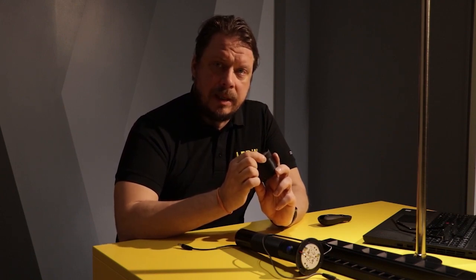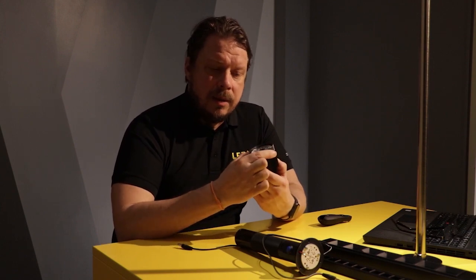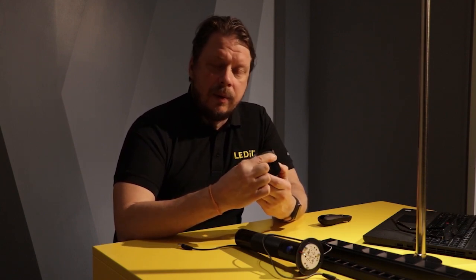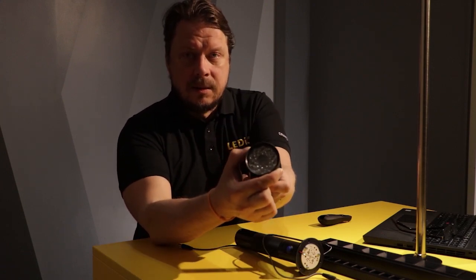For example, you can have your existing spotlight design that you designed with our standard fixed beam Ilona lenses. There you have options of spot, medium, and wide. And then you can easily add Ilona Zoom. All you need to do is just change the front ring holding the lens in place, this trim part here, so that you can rotate it and it will rotate the sublens in the front of the lens.